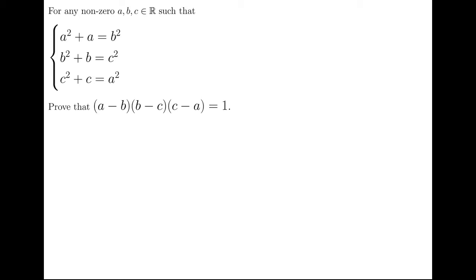such that a squared plus a equals b squared, b squared plus b equals c squared, and c squared plus c equals a squared, show that (a minus b) times (b minus c) times (c minus a) is always 1.